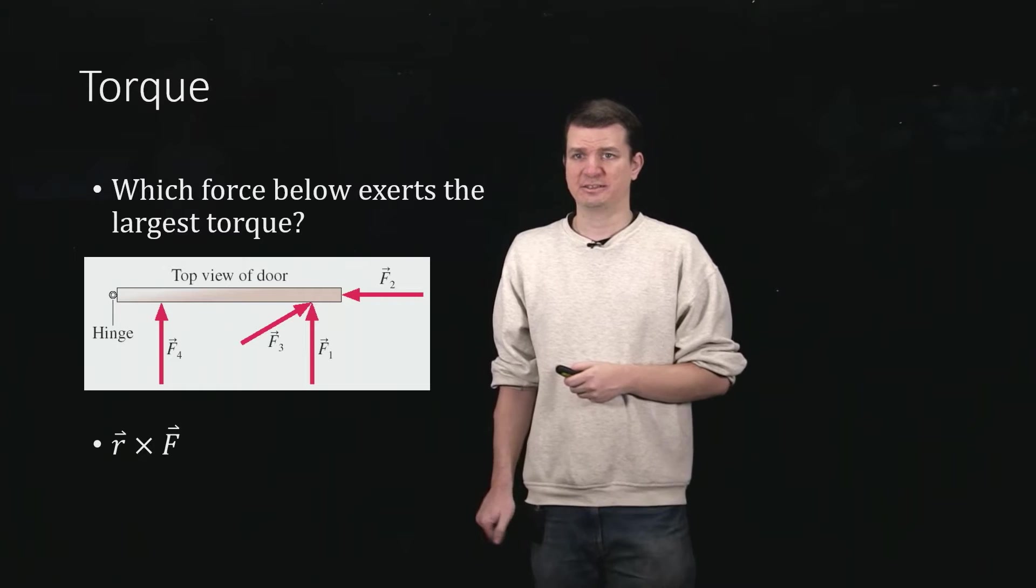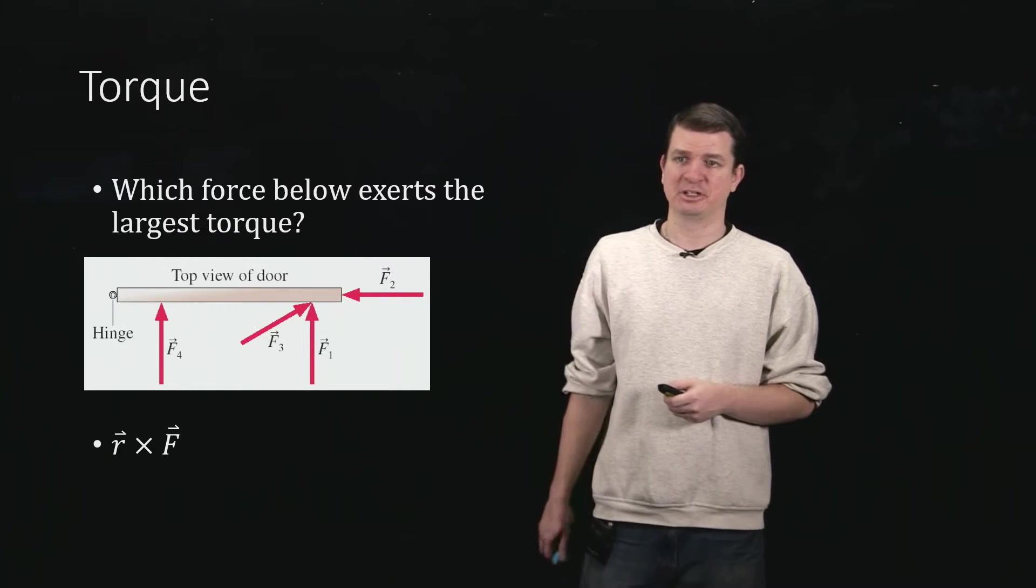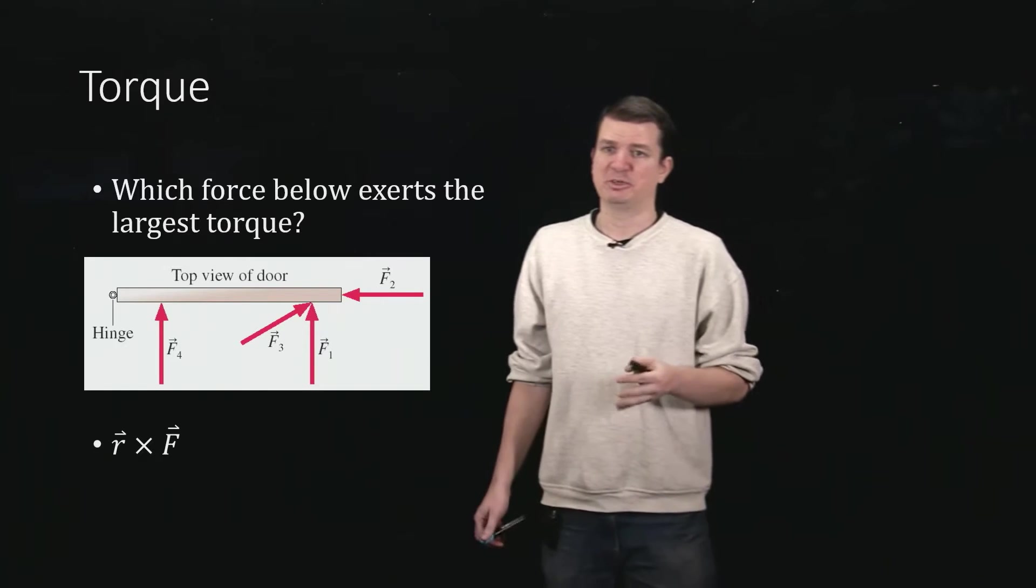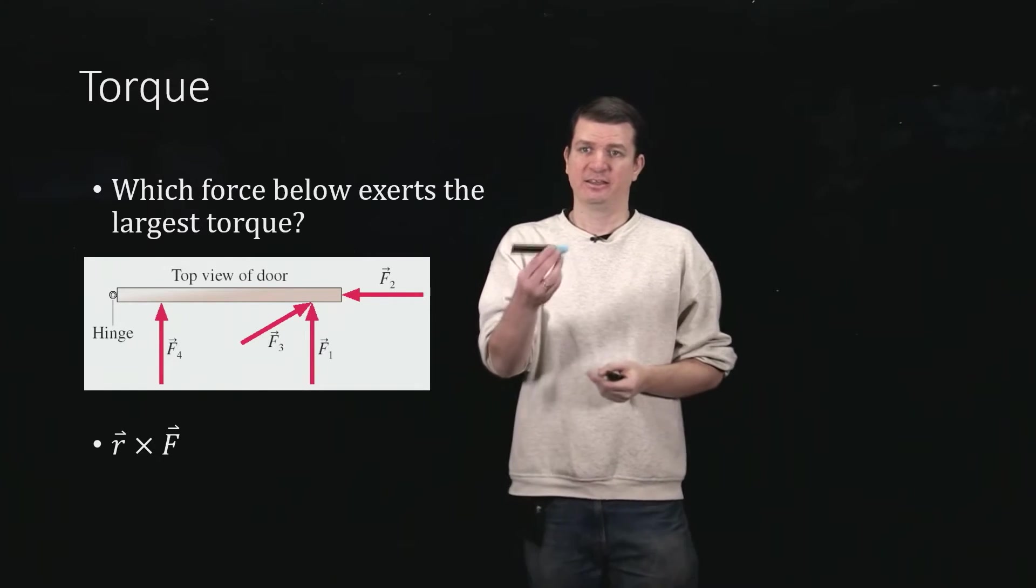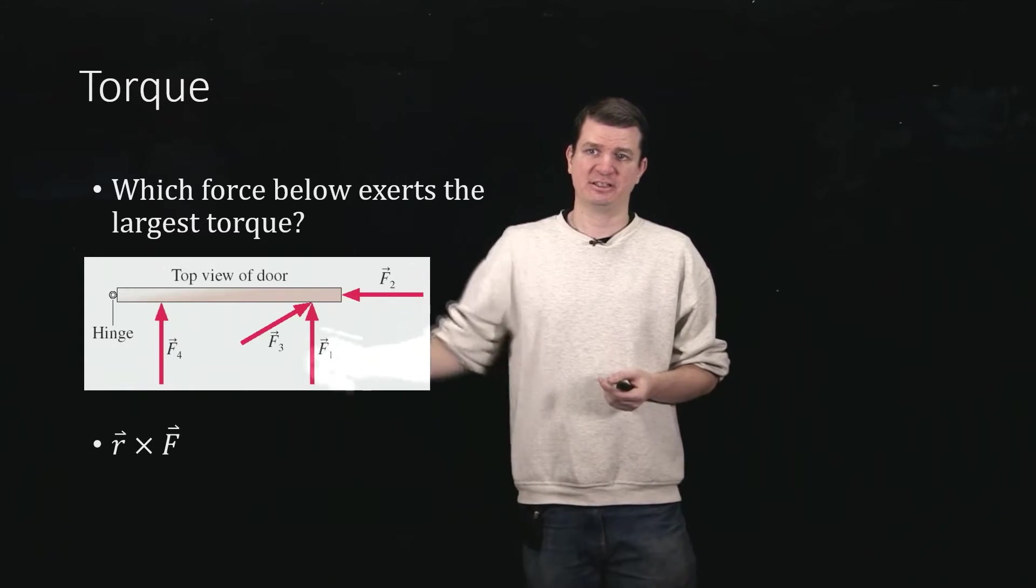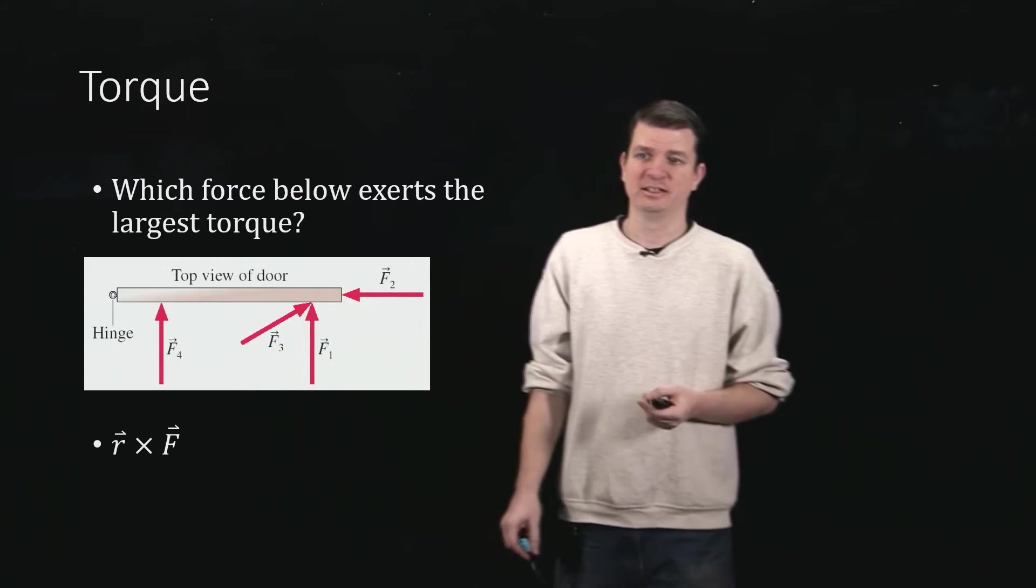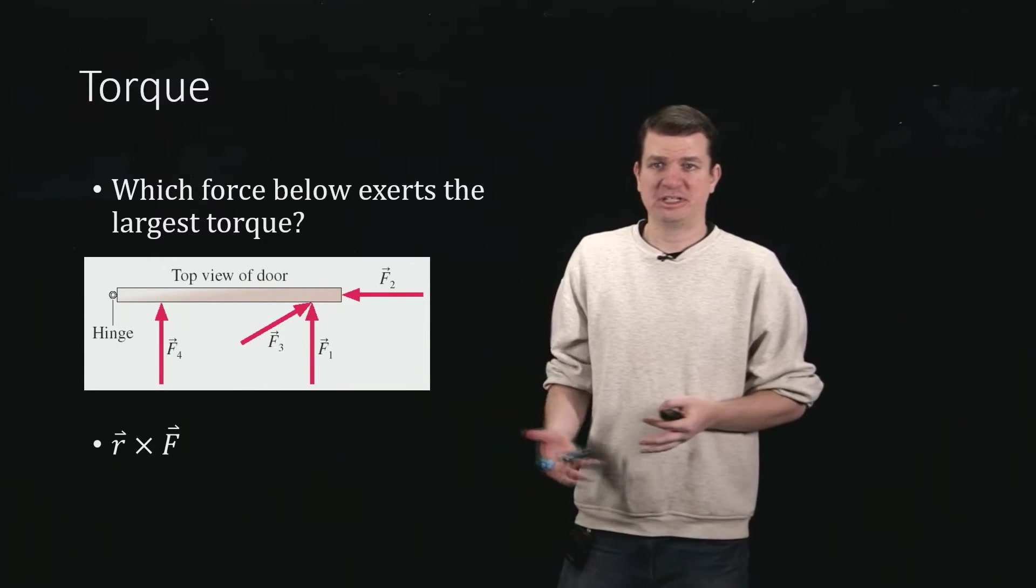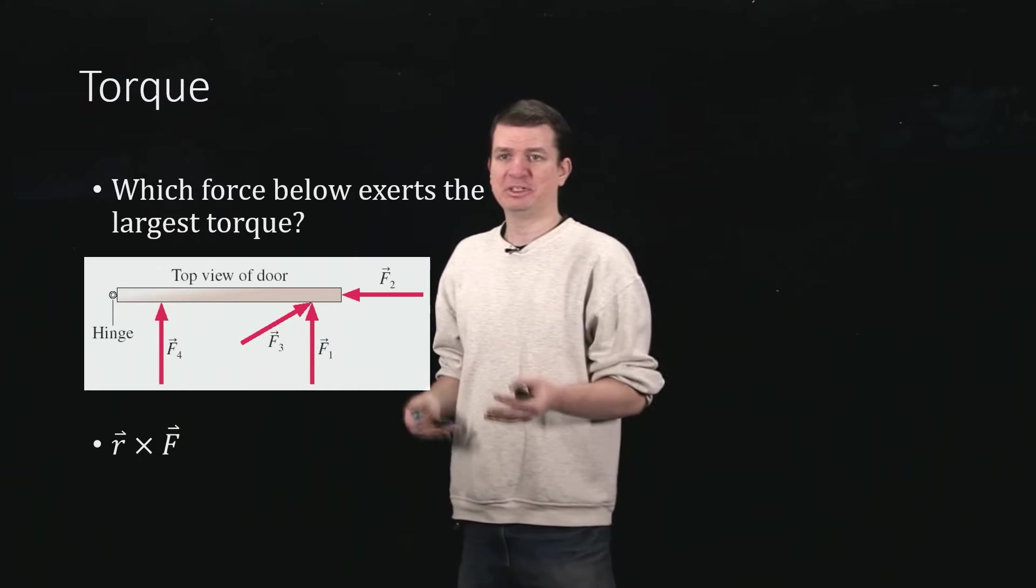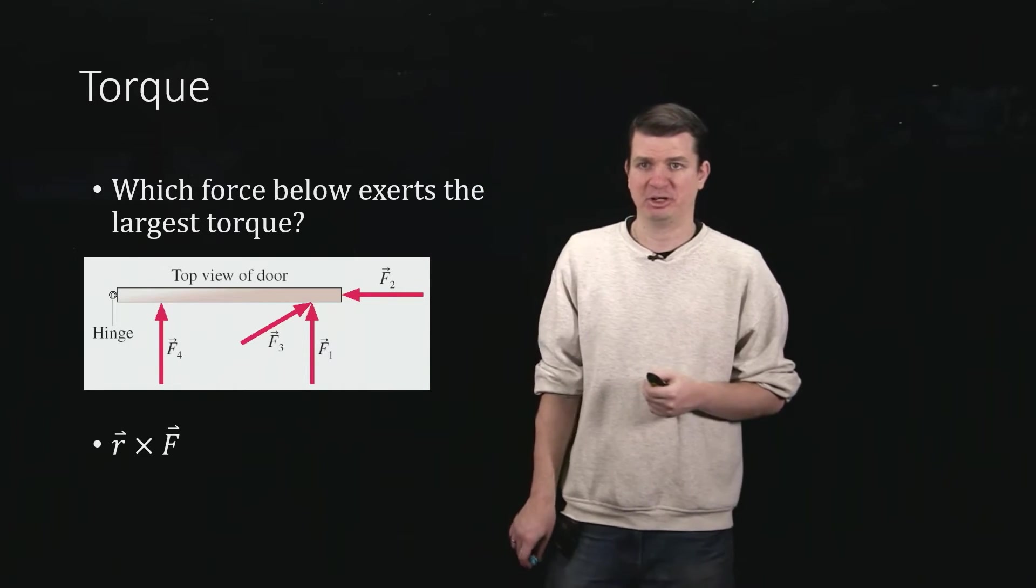So we could ask something like this: which of these forces exerts the largest torque? And not surprisingly, this is exactly the sort of thing that we just discussed. This one, because it is in the same direction as our radial vector, which is just basically along the door in this case, that cross product gives zero because there is no perpendicular part of the force. And remember, cross products are looking for the perpendicular part.